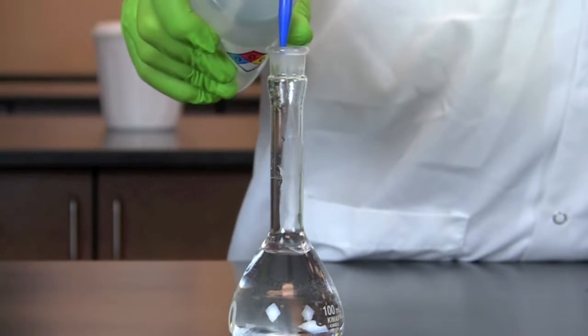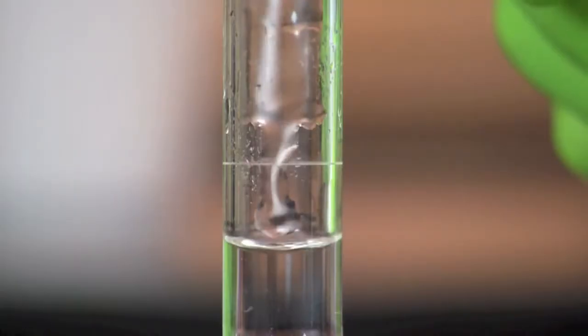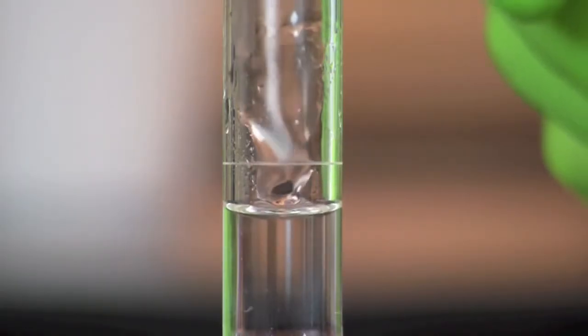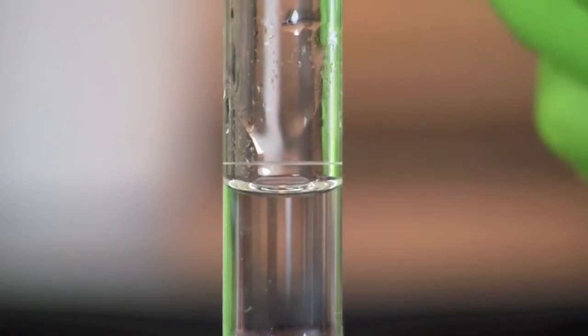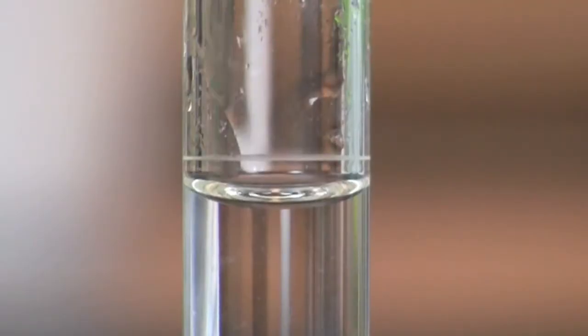Once all of the sodium chloride crystals are dissolved, carefully add distilled water to the flask until the meniscus touches the etched mark on the neck. Using a dropper bottle or transfer pipette makes it easier to add water drop by drop when near the etched mark.